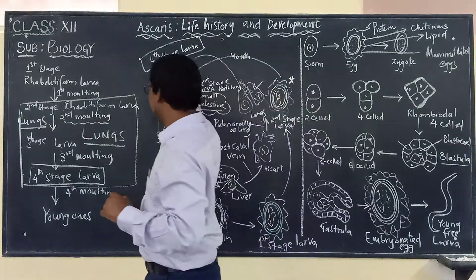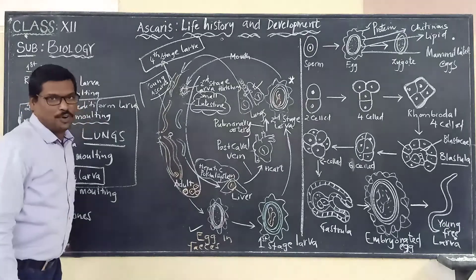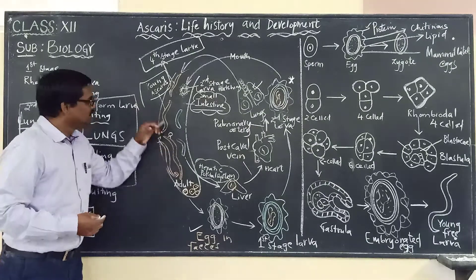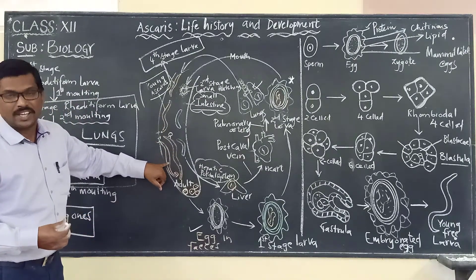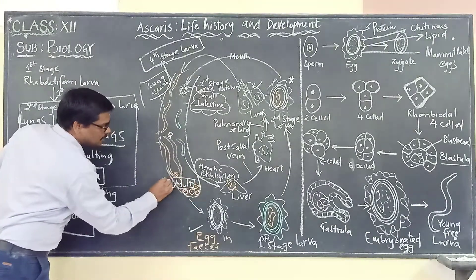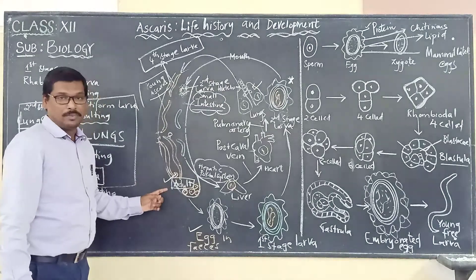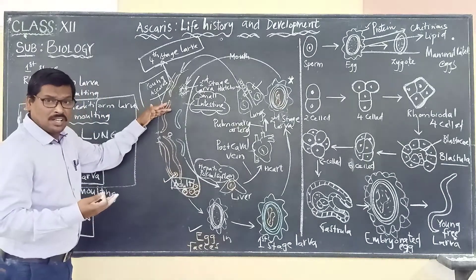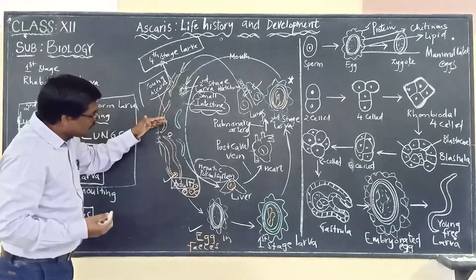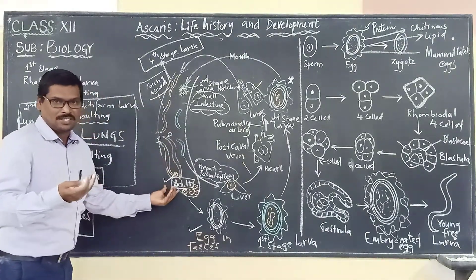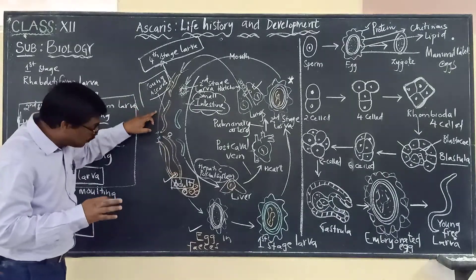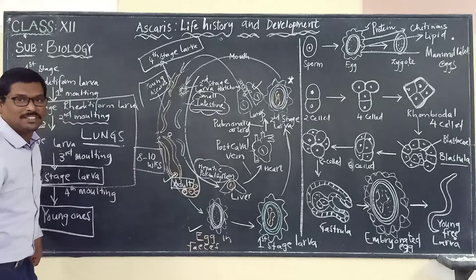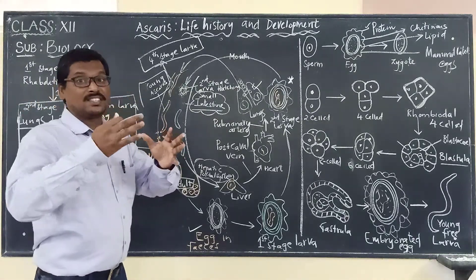After the fourth moulting, the fourth stage larva changes into young Ascaris worms. These young ones develop into adults. For the young ones to attain sexual maturity — at which point we call them adults — it may take about 8 to 10 weeks.